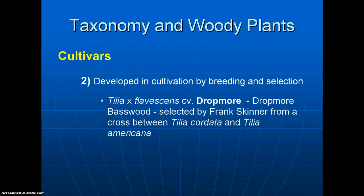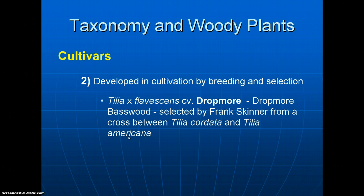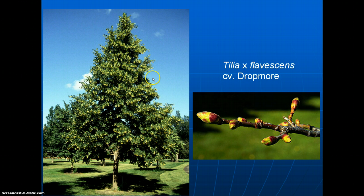Another way to develop cultivars is by breeding and selection. For example, the Dropmore basswood, Tilia flavescens — the X indicates it's a cross between two species — was selected by Frank Skinner from a cross between Tilia cordata, little leaf linden, and Tilia americana, our native basswood. Out of all the offspring, he selected one he really liked, and it's quite used on the prairies — a very nice plant.